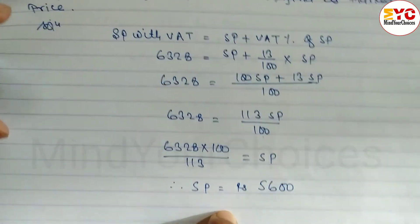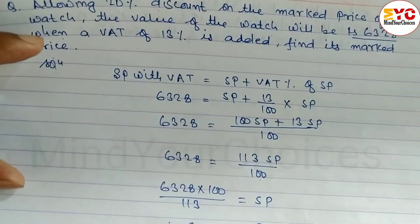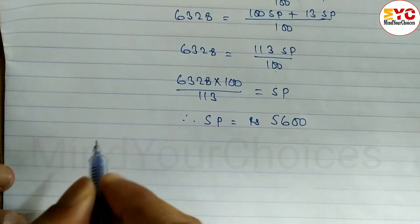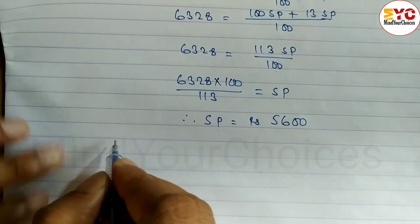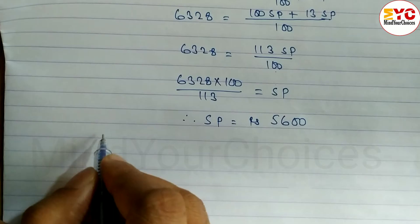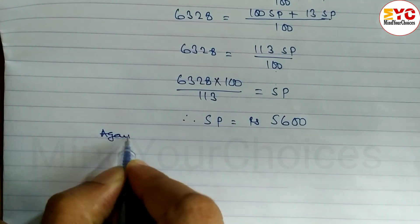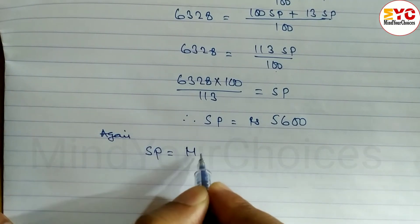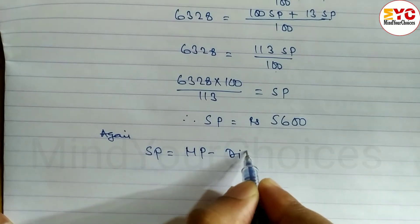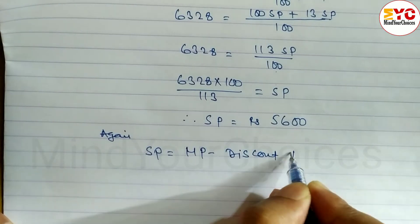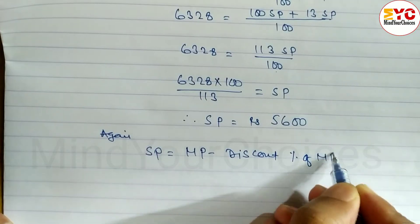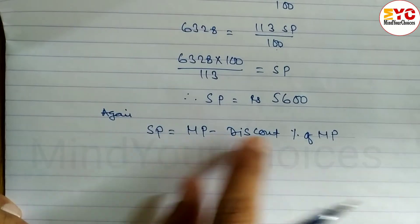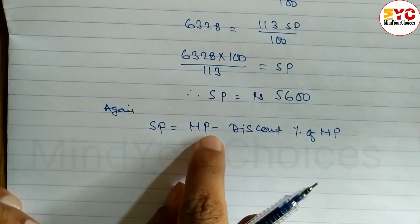Now we have the selling price. We use the selling price and discount formula to find the mark price. The formula is: SP equals MP minus discount percent of MP. Using this SP formula we will get the value of MP.